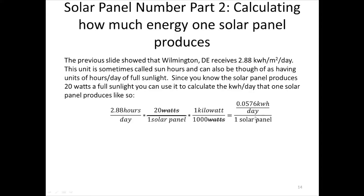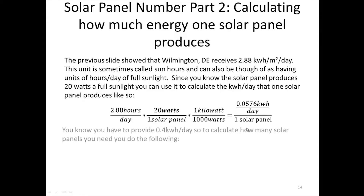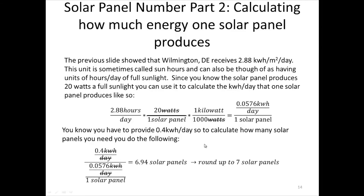Now we figure out how many solar panels we need. We need to provide 0.4 kilowatt-hours per day from the previous step. Dividing 0.4 kilowatt-hours per day by 0.0576 kilowatt-hours per day per panel gives 6.94 solar panels. Since we can't have a fraction of a panel, we round up and need 7 solar panels.